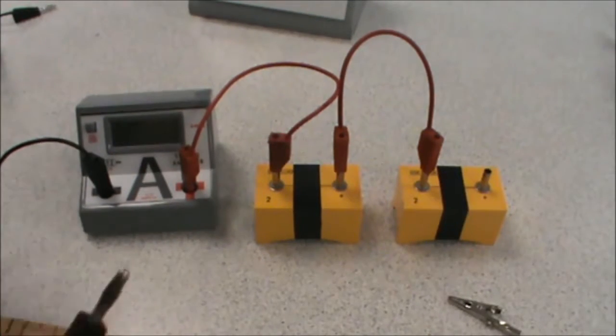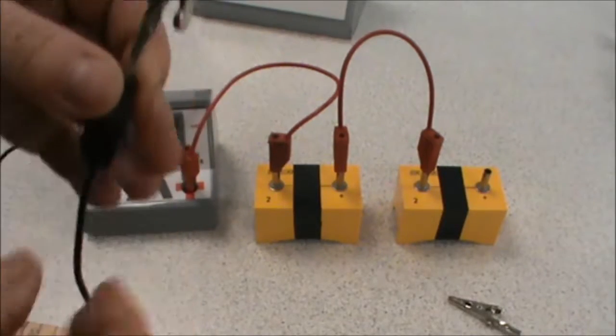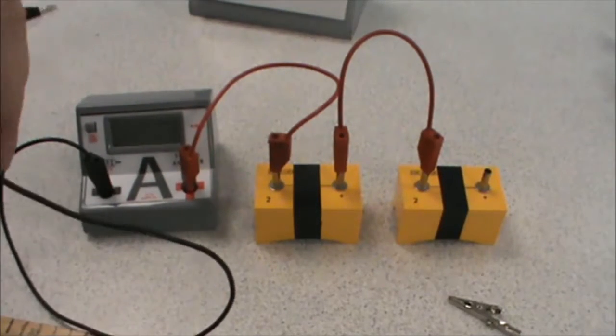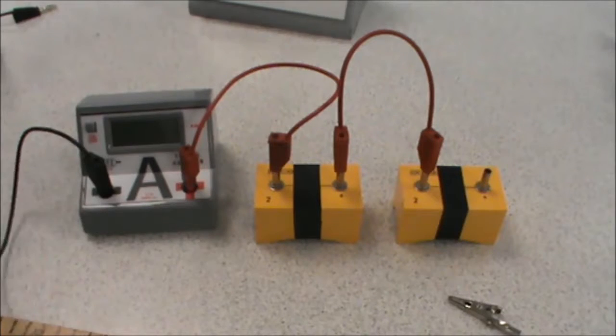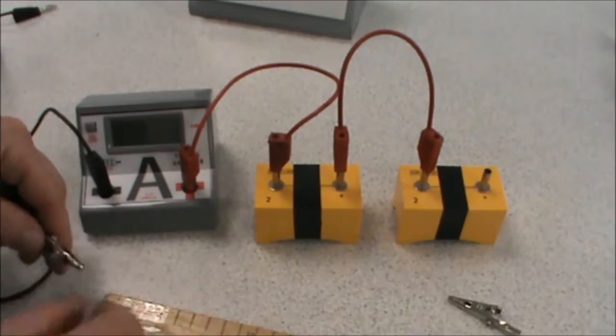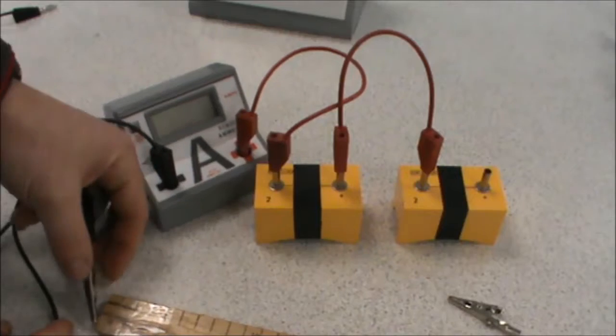With a crocodile clip on the end, and that is attached to the end of our meter rule and the wire there.